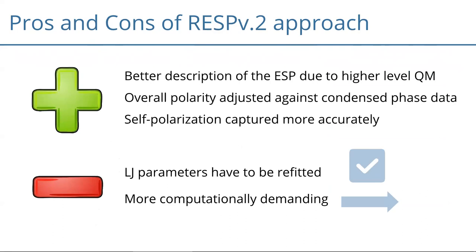To summarize RESP2: the pros are that we should describe the ESP better due to higher-level QM, we have a nice parameter to fit the polarity against condensed phase experimental data, and we should capture molecular polarizabilities more accurately without relying on error compensation from HF/6-31G*. The downside is that using this new charge model with current Lennard-Jones parameters probably won't give better results — we have to refit them — and the higher-level QM calculations are more expensive.